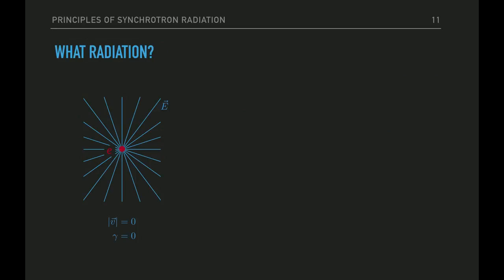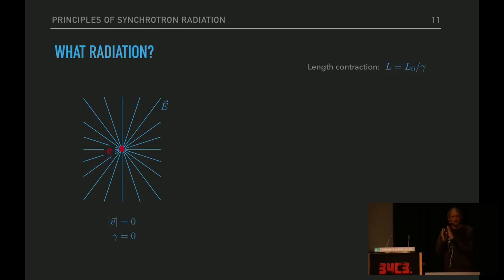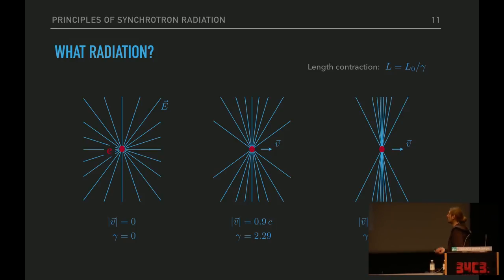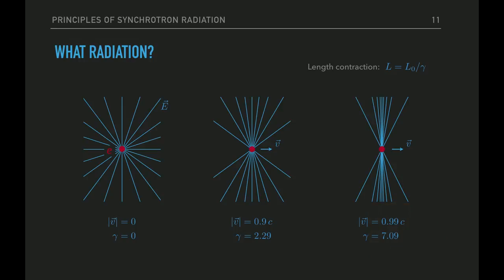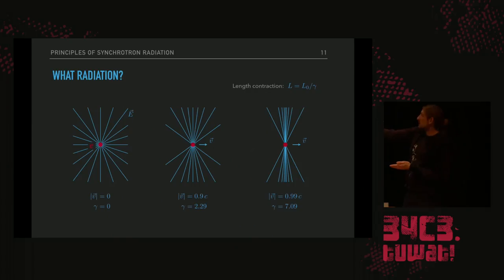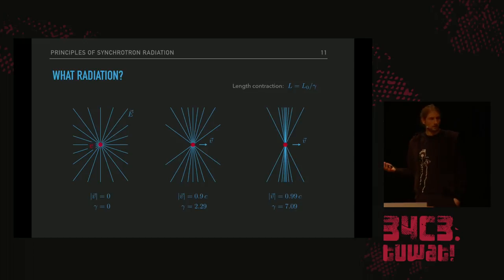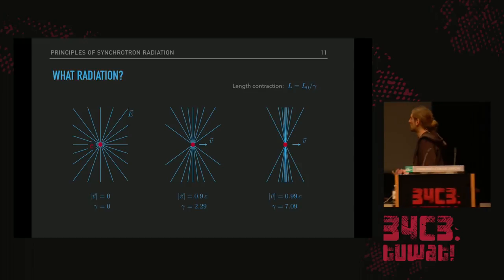Der nächste Schritt ist: Warum strahlen die Elektronen? Das ist ein Elektron, ich habe das elektrische Feld gezeichnet. Durch die Lorentz-Kontraktion – wenn man das elektrische Feld eines schnellen Teilchens betrachtet – werden die Feldlinien zusammengedrückt, bis nur ein kleiner Konus bleibt, der senkrecht ist zur Bewegungsrichtung. Wenn man das Teilchen beschleunigt, muss sich diese Feldkontraktion ändern, aber das kann nicht unendlich schnell passieren – maximal mit Lichtgeschwindigkeit. Das heißt, wir haben ein zeitabhängiges Feld, also Strahlung.